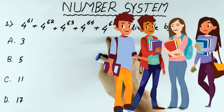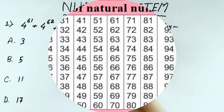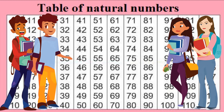Now let us discuss more things about numbers. The natural or the counting numbers are 1, 2, 3, 4, 5, etc. There are infinitely many natural numbers. The set of natural numbers is sometimes written as N for short.